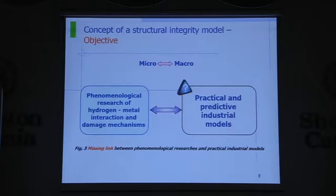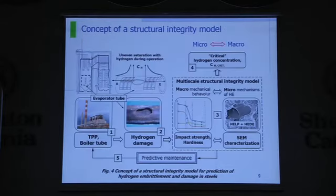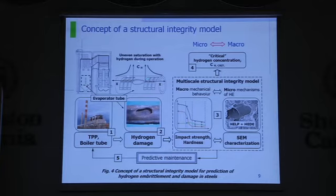Co-existence of different mechanisms is very important in order to establish a structural integrity model. The idea of the structural integrity model is to provide a link between phenomenological research of hydrogen interaction and damage mechanisms, and to provide a practical industrial model to link macro-scale behavior with micro-scale behavior. We have boiler tubes damaged during exploitation, with hydrogen-induced damage, resulting in a real-life hydrogenation of water tubes.